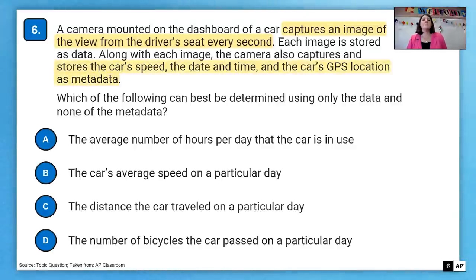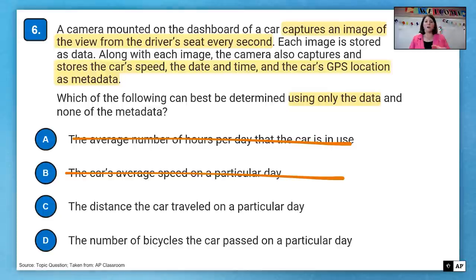Which of the following can best be determined using only the data and none of the metadata? So we're not worried about that metadata. We're only worried about only the data, which is an image from the view from the driver's seat. So average number of hours has nothing to do with hours because we're just looking at the view. The average speed, again, we don't have that metadata. All we have is the view from the car.